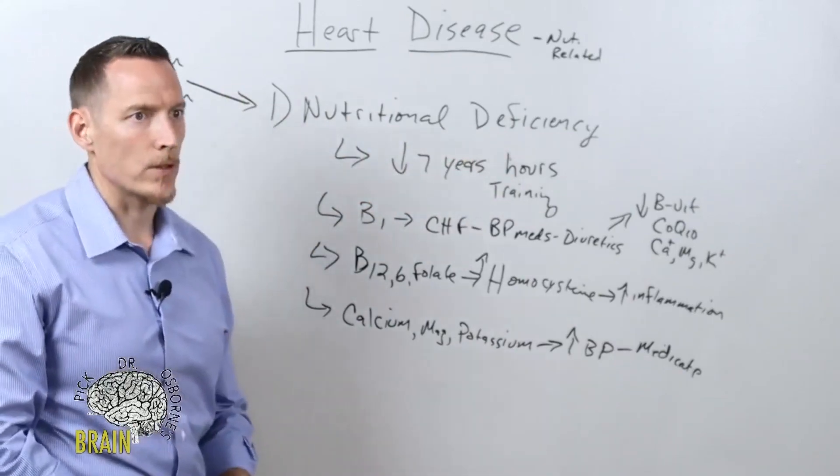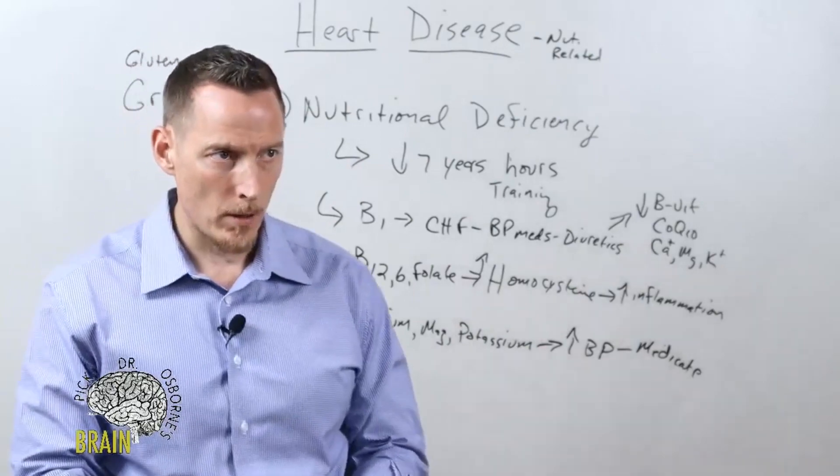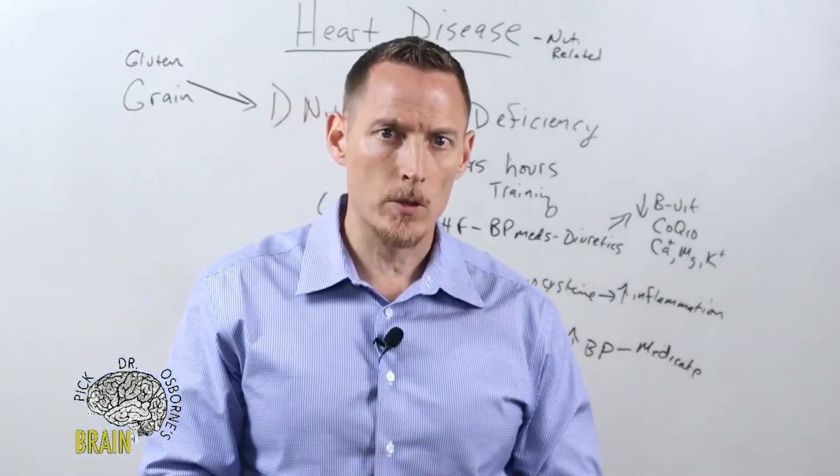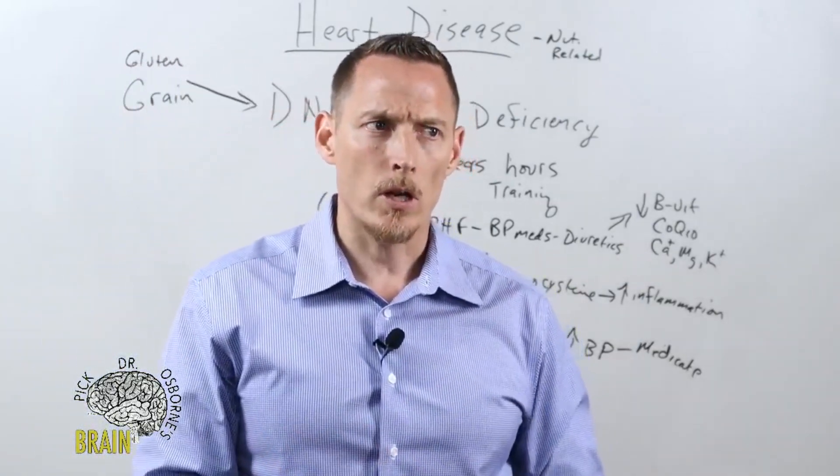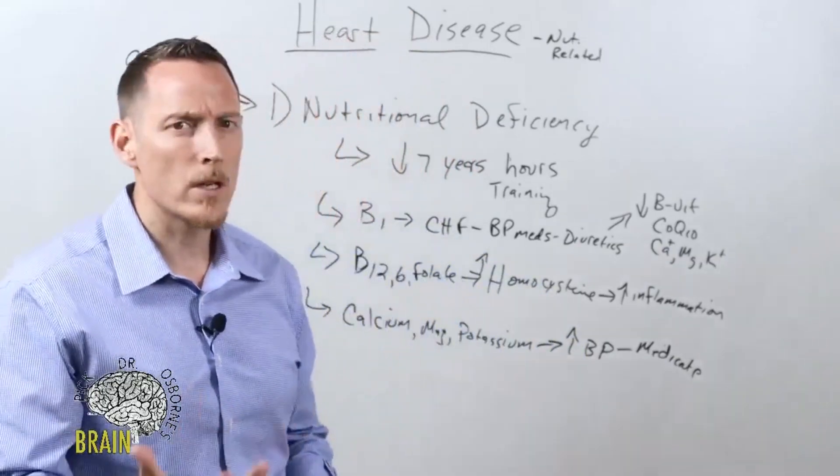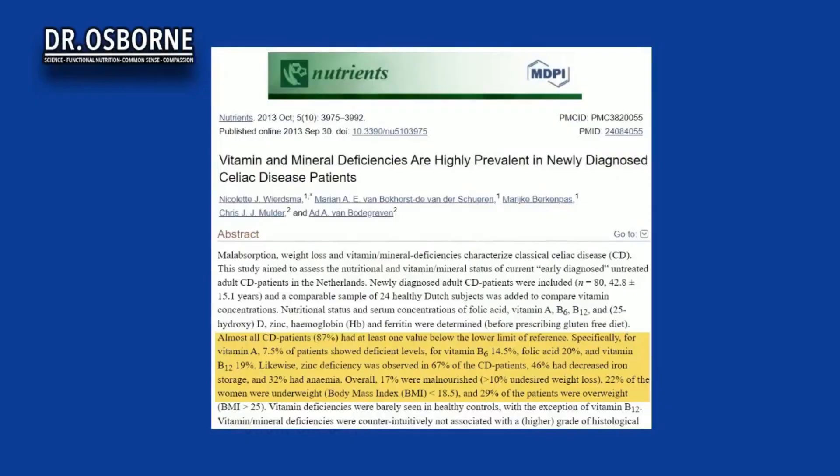Let's pull up slide number one here. I want to show you some research on this very topic. What you can see here is that vitamin and mineral deficiencies are highly prevalent in newly diagnosed celiac disease patients. So people with gluten sensitivity, when they're originally diagnosed, the gluten has damaged their GI tract to such a great degree that on average they have mass scale deficiency.